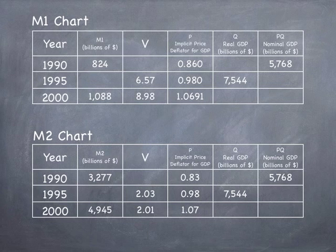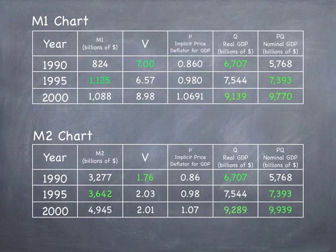How do we find the missing components? Since money times velocity equals price times quantity, you plug in the information into the formula that is provided to find the missing components, which are shown in green.